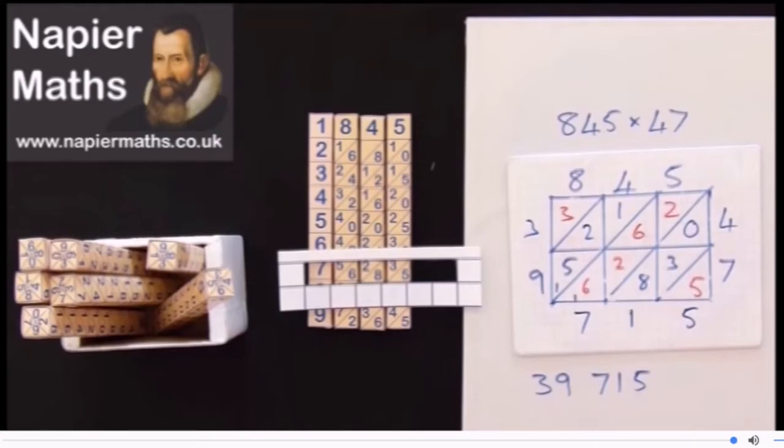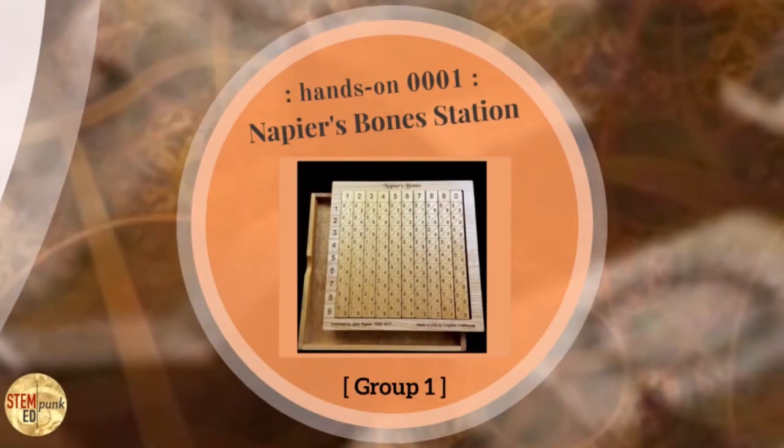It turns out by just doing simple addition along these lattices, you are able to find the answer to complex multiplication problems. In my program, I do have two sets of Napier's bones that you can use for hands-on time, and an instruction sheet to guide you through how to perform calculations using Napier's bones, both multiplication and division.